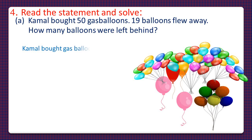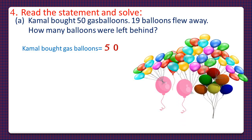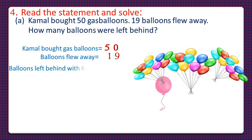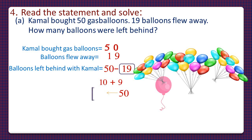Kamal bought 50 gas balloons. 19 balloons flew away, so balloons flew away is equal to 19. We have to find the balloons left with Kamal. So we'll subtract 19 from 50. Let's split 19 into 2 parts: 10 plus 9. First, we'll subtract 10 from 50, moving in the backward direction — 50 minus 10 gives us 40. Then moving backward again, we'll subtract 9 from 40, and we'll get the answer 31.